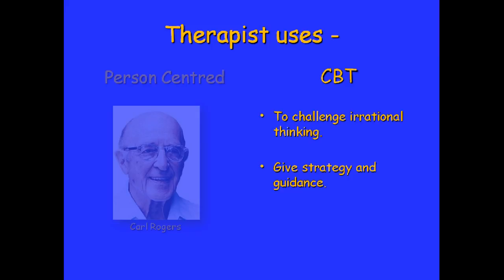CBT also gives strategy and guidance, and is a good therapy for individuals who need a technique to overcome their difficulties. Some clients may want strategy and some background into why their thinking may be difficult for them and how it affects their lives. CBT also produces a measurable outcome — you can have the client fill in a core assessment tool at the start, showing where they are in terms of anxiety and worry, and then complete it again at the end to see how far they've travelled and what's changed. You can do that for person-centred therapy as well, but it's more commonly used in CBT.